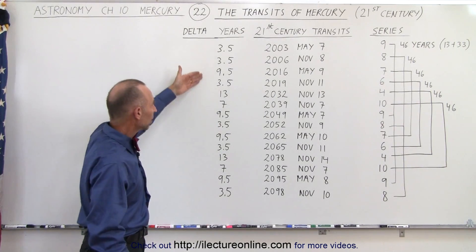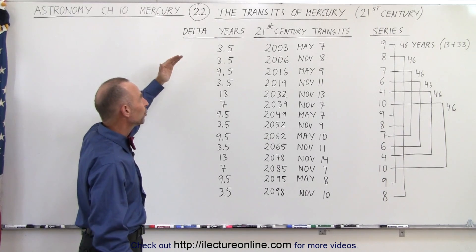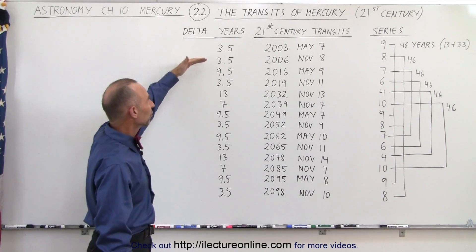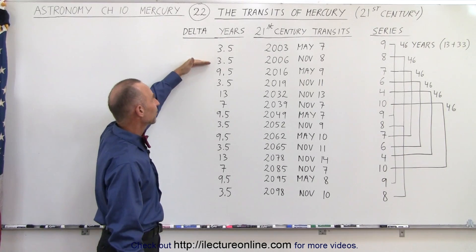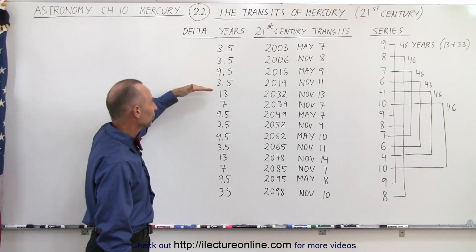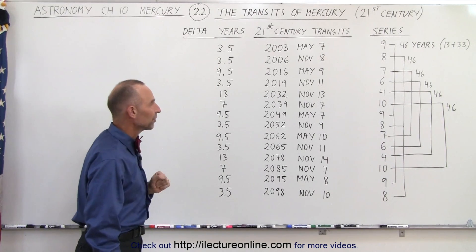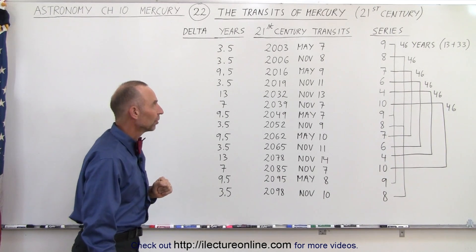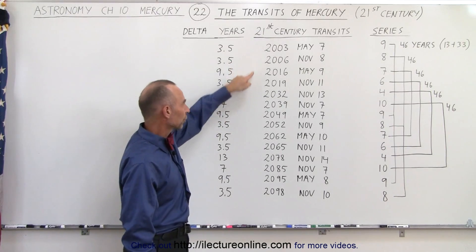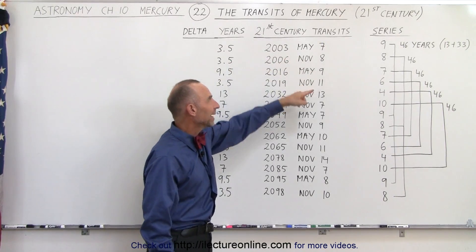Notice that in this column, we have the difference in time between transits. Notice it's either 3½ years, 9½ years, 13 years, or 7 years. Also note the year in which it will occur, the month, and the date.